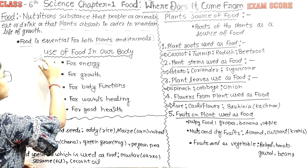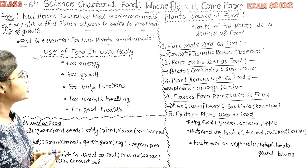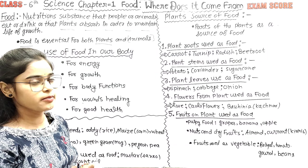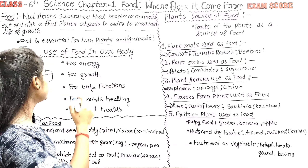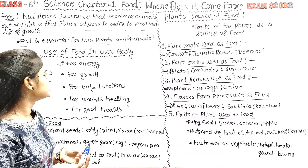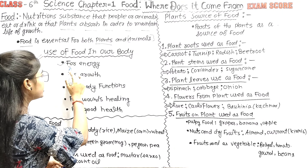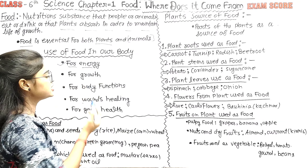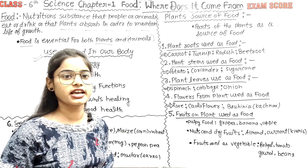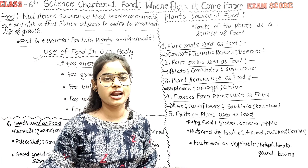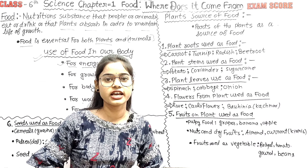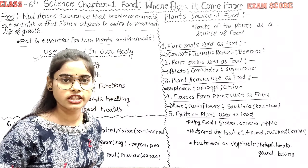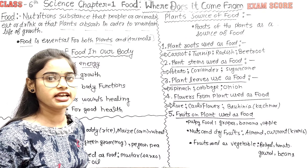What are the uses of food in our body? The first use is for energy. Energy helps us to work. We are dancing and playing — we get energy from food.